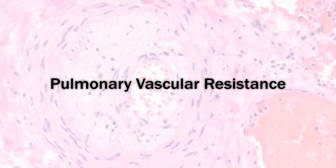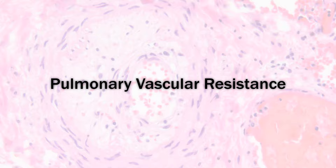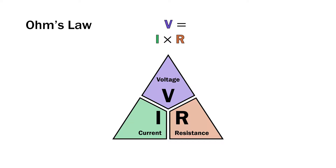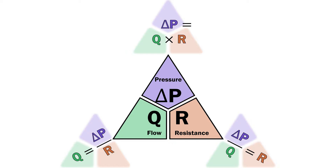Now we're going to look at hemodynamics, specifically the concept of pulmonary vascular resistance — the right-sided version of systemic vascular resistance. This is the defining physiological abnormality of pulmonary arterial hypertension, and it's what pulmonary vasodilators act on and reduce. To define resistance, we need Ohm's law. In electricity, V equals IR — voltage equals current times resistance. In fluid dynamics, instead of voltage it's pressure, specifically the change in pressure, and instead of current it's flow, but resistance is the same.